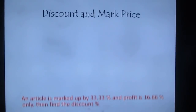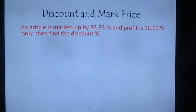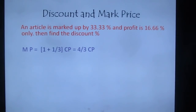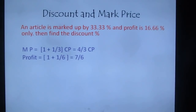Third question: an article is marked up by 33.33% and the profit is 16.66%. Find the discount percentage. The question changes but the method stays the same. MP = (1 + 1/3) × CP = 4/3 × CP. Profit of 16.66% = 1/6, so SP = (1 + 1/6) × CP = 7/6 × CP.